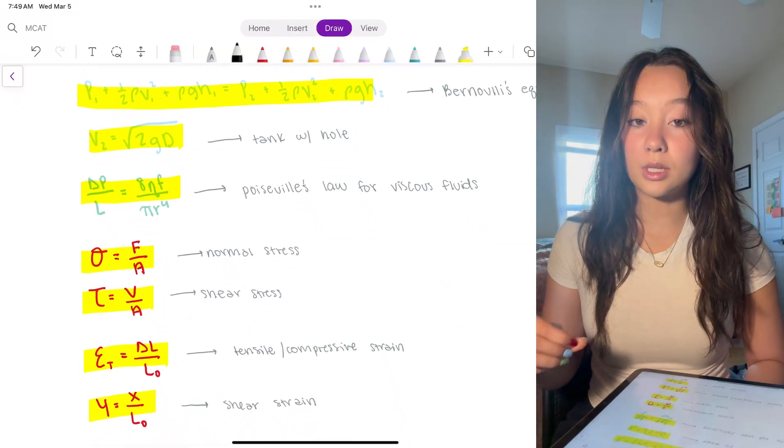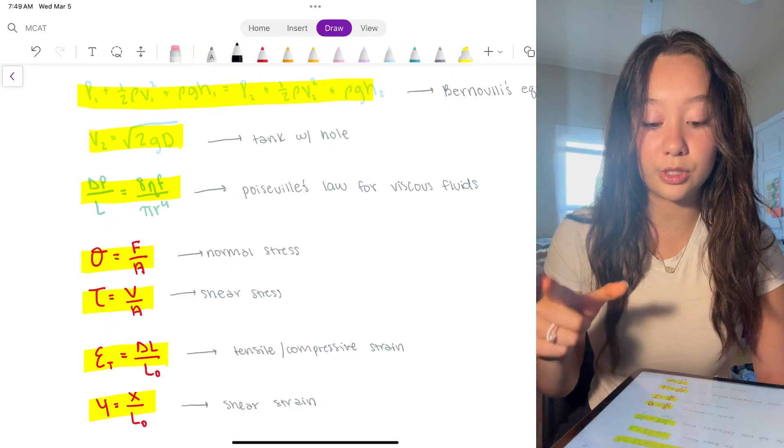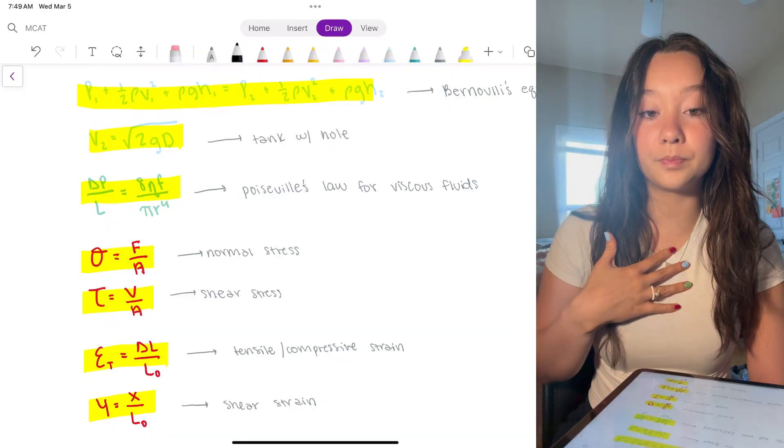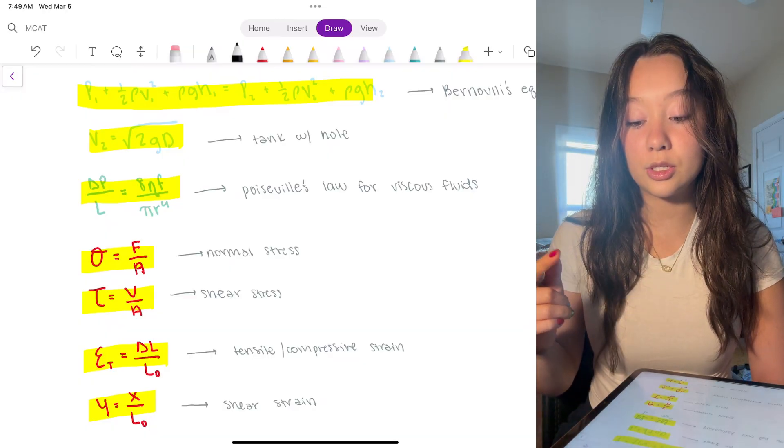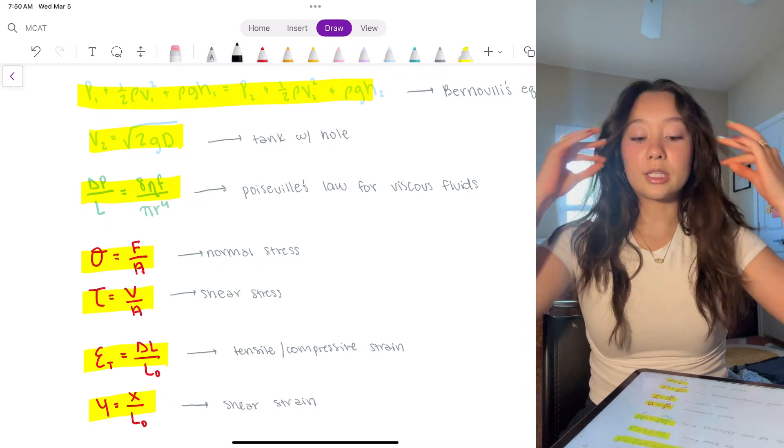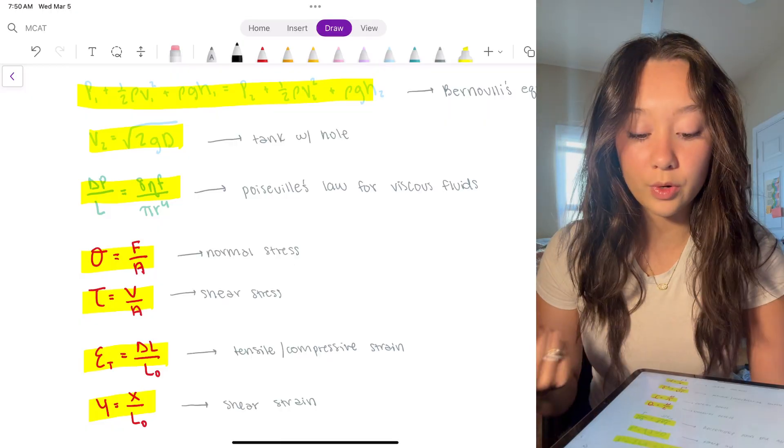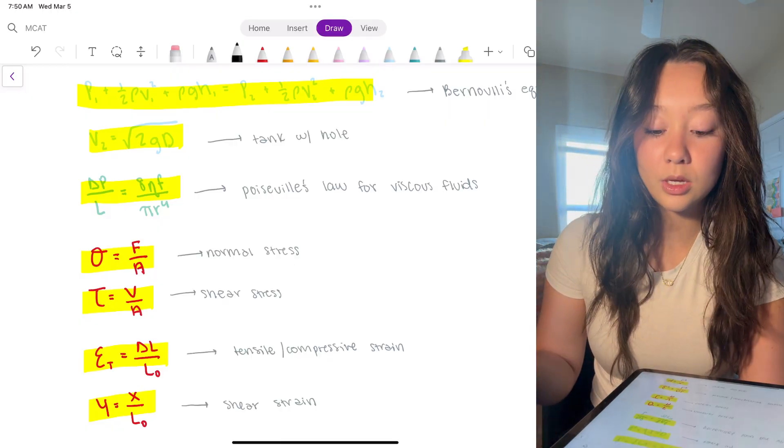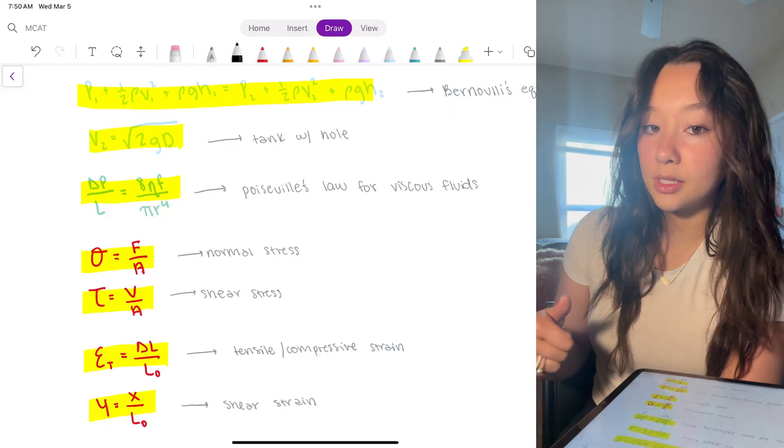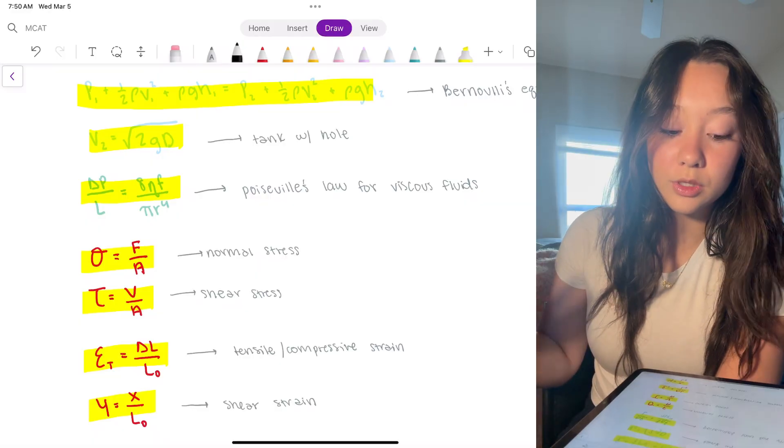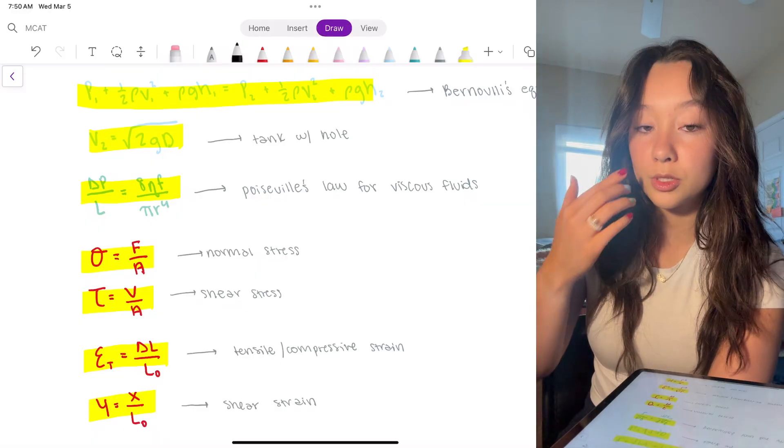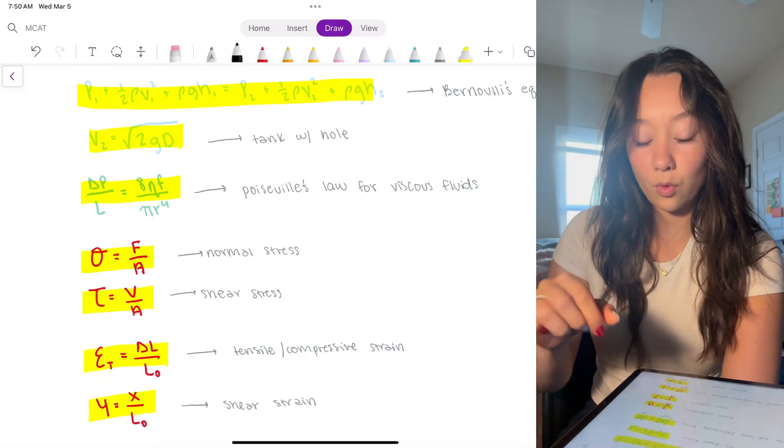Poiseuille's law, don't think this one's as high yield, but the important one with this one is to remember that the relationship with the radius is to the fourth power. So a question like this might say, if you double the radius, what would happen to the change in pressure? Here it's just important to know that radius is to the power of four. So it's going to be decreasing the pressure by 16 instead of by four as it would if it's squared. Radius is normally squared in these equations, but Poiseuille's law, remember it's to the power of four.